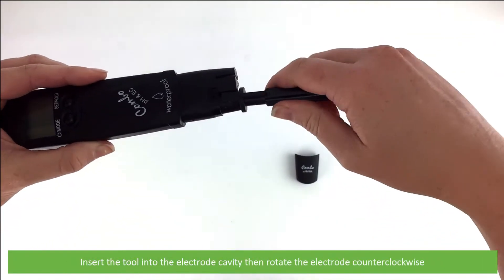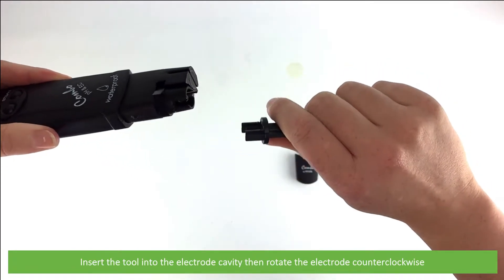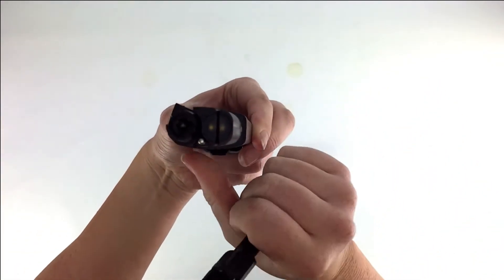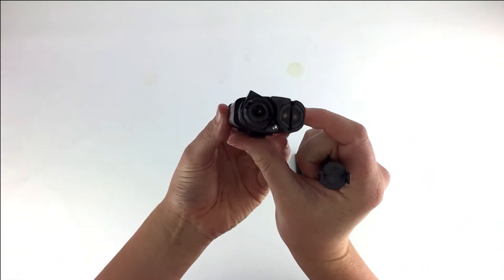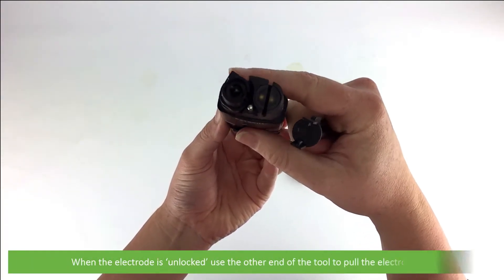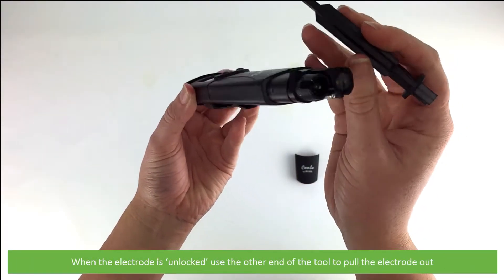Insert the tool into the electrode cavity then rotate the electrode counterclockwise. When the electrode is unlocked, use the other end of the tool to pull the electrode out.